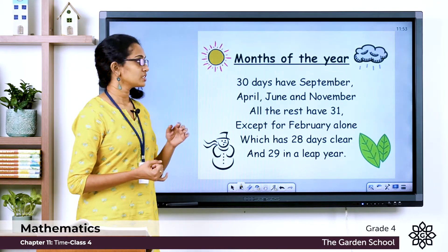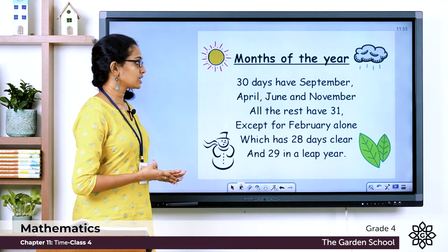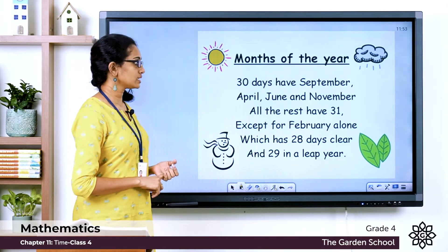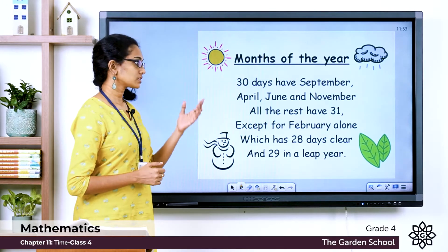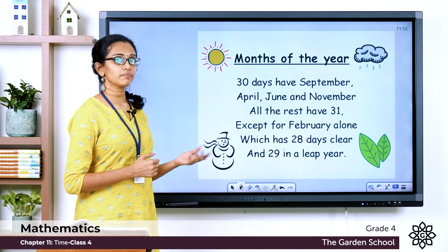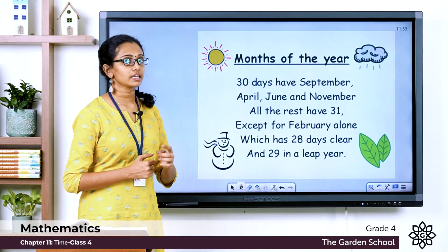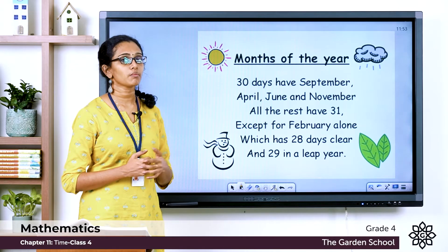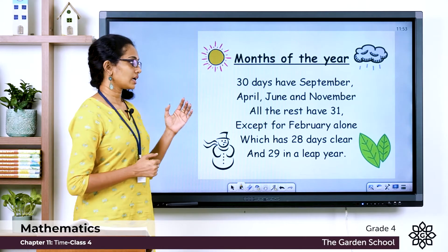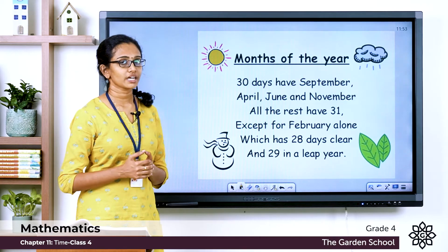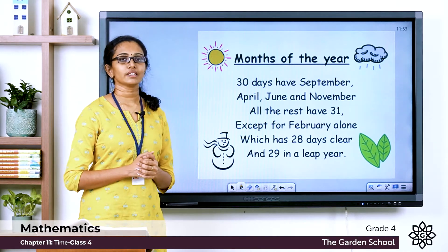Which are the other months? January, February, March, May, July, August, October and December — these months have 31 days. And February has only 28 days, but once in every 4 years it will have one more day, or 29 days.